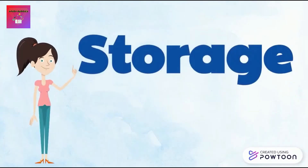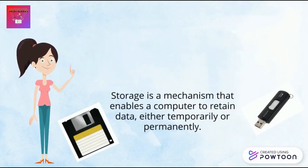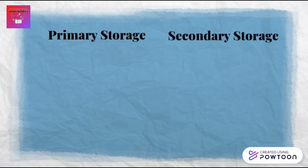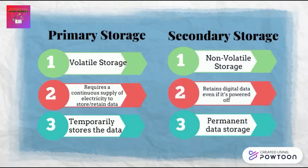Now let's learn about storage. Storage is a mechanism that enables a computer to retain data either temporarily or permanently. There are two types of storage: primary storage and secondary storage. Primary storage is also known as volatile storage — it requires a continuous supply of electricity to store and retain data, and temporarily stores the data. Examples of primary storage are cache memory and random access memory (RAM). Secondary storage is also known as non-volatile storage — a type of storage mechanism that retains digital data even when powered off or not supplied with electrical power. It is used for permanent data storage. Examples are hard disk, USB storage and optical media.